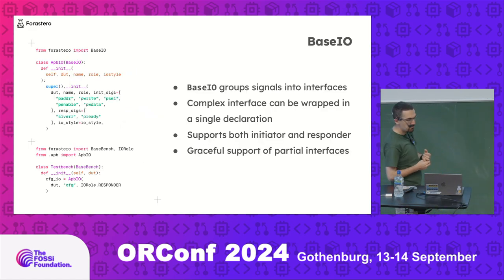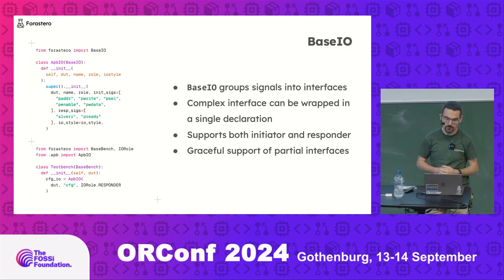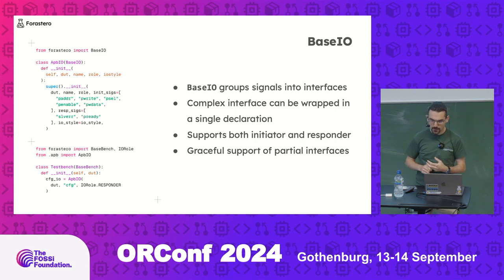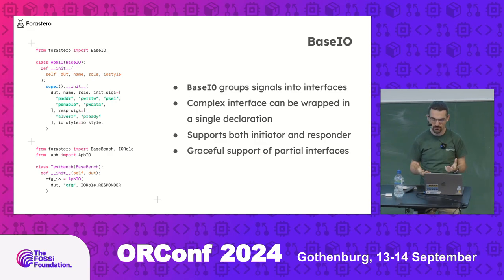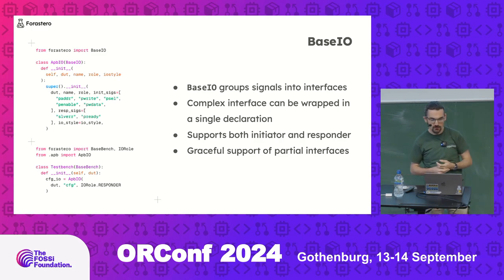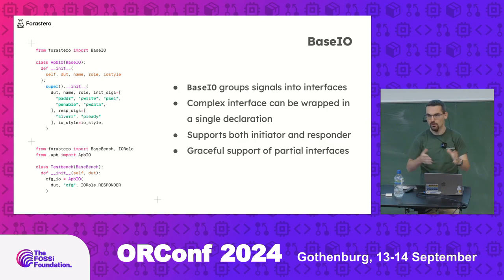Sitting behind this is BaseIO — how we're wrapping our buses and signals. They're just classes, relatively easy to declare. You pass through the DUT, the prefix name, the IO role (whether it's a responder or initiator), and the IO style. You give it a list of signal extensions — here are the ones for APB — and it's fairly simple to stitch up. We're not always completely disciplined in how we interface with things. For AXI stream, we may not implement every signal every time, so we have a graceful fallback. If you don't want to implement strobing and you're always going to send every channel as valid, you can leave that out. You'll get a warning in your log and it will move on. You can specify a default value to use if a signal isn't provided.